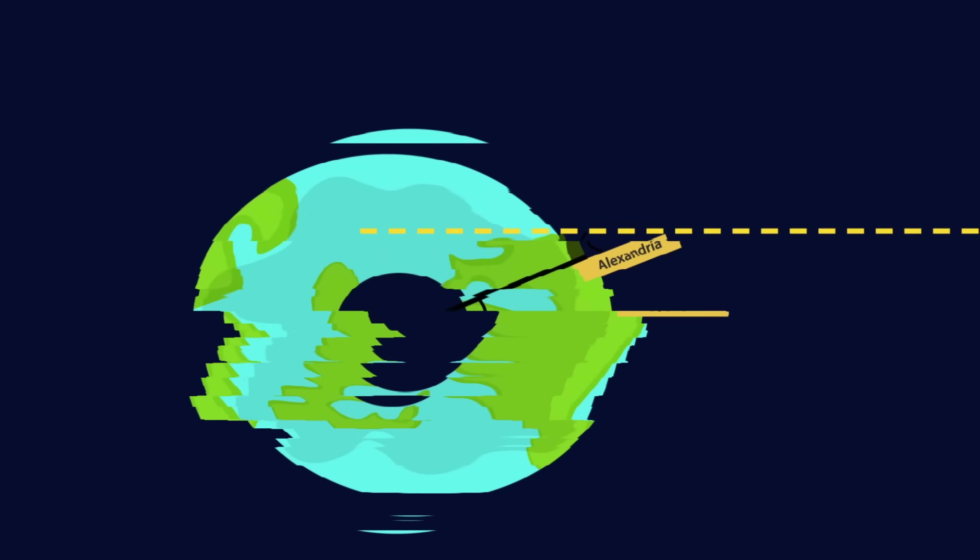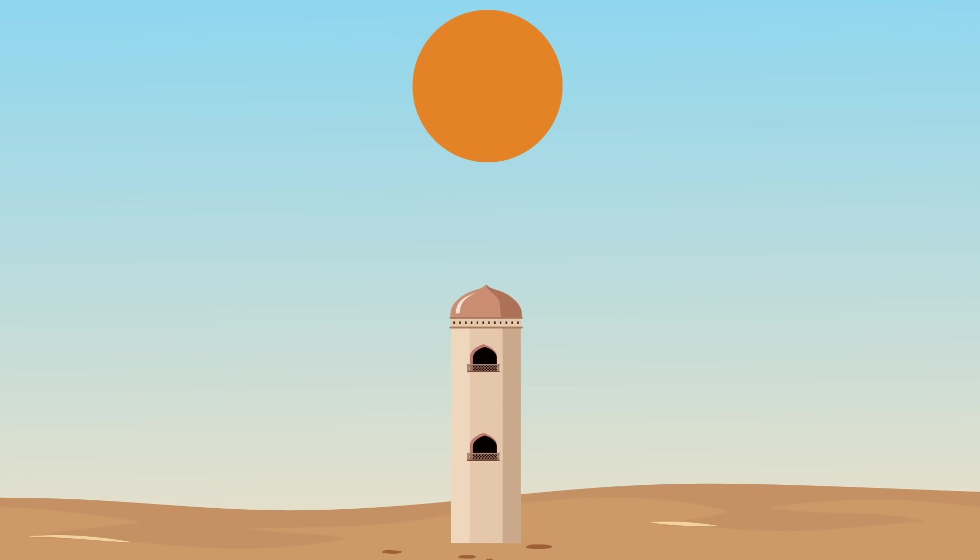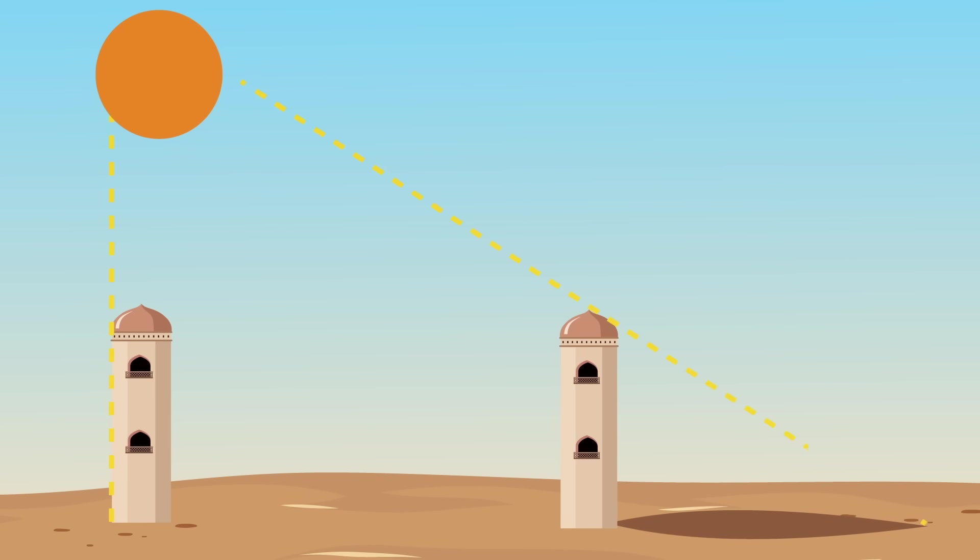But let's say the Earth were flat. Well, if the Sun is directly over one place at a certain time, where no shadows are cast, and the Sun is not super far away, then also, obviously, it's going to cast a shadow on a vertical object at a different location at that same time. So Eratosthenes' observation could also tell us the Earth is flat and the Sun is much closer than we think. And that's what flat-earthers believe. And now we're going to see why it's wrong.